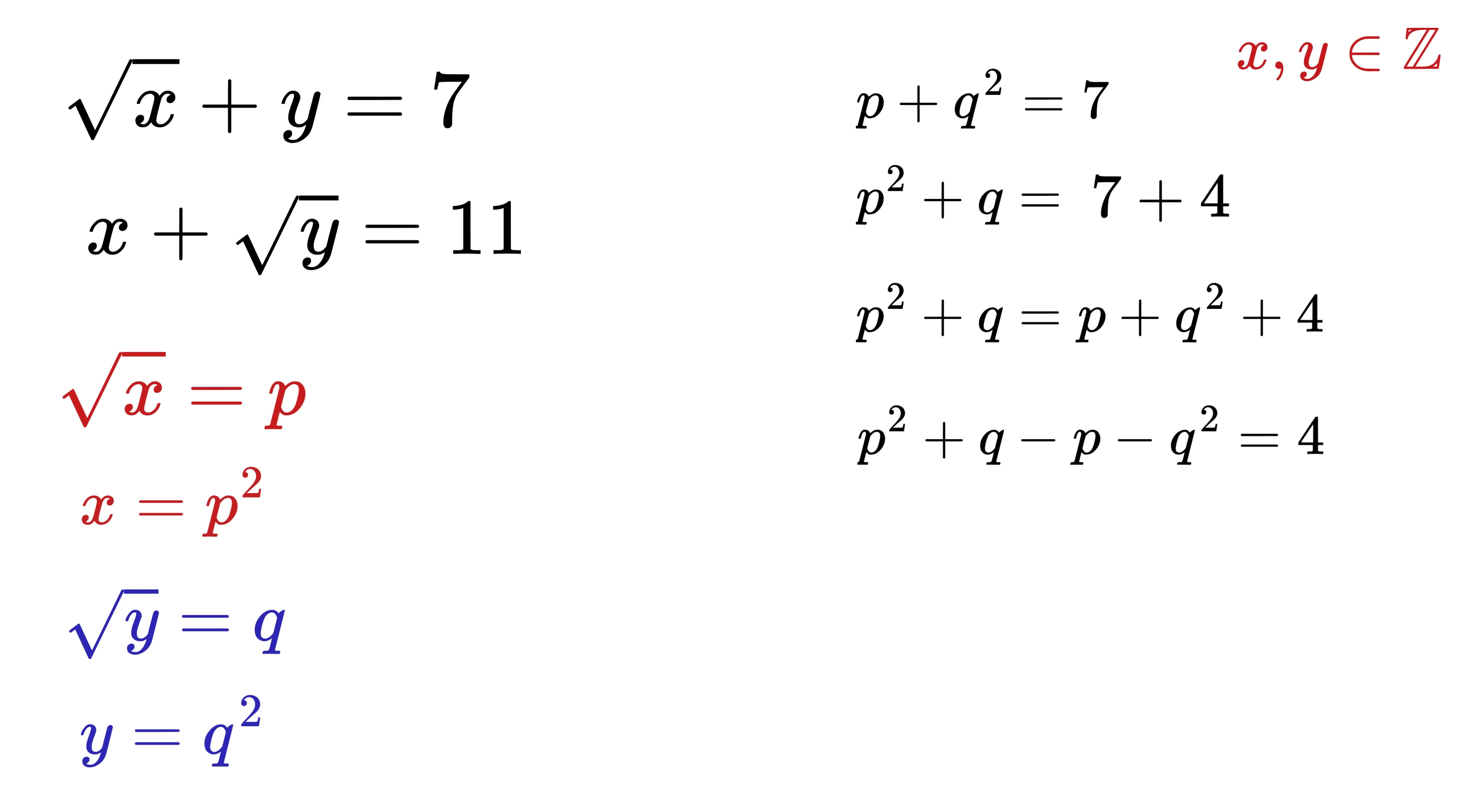Now we group them properly. Write this p² and minus q² together. Now look here: minus of (p minus q) when expanded becomes minus p, and this minus of minus q becomes plus q, or this becomes q minus p. So we can rewrite this part as minus (p minus q), and that equals 4.